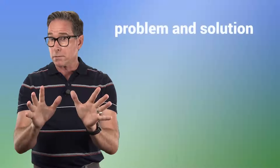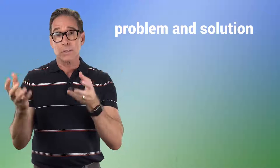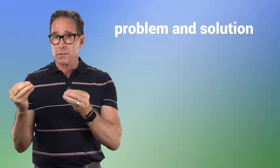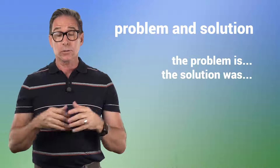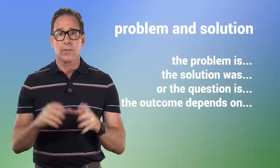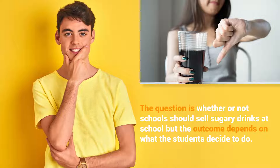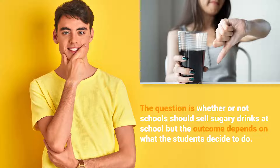The last technique is to use problem and solution to briefly explain what the problem is and how to resolve or fix it. Words and phrases to indicate problem and solution include the problem is, the solution was, the question is, or the outcome depends on. For example: the question is whether or not schools should sell sugary drinks at school, but the outcome depends on what the students decide to do.